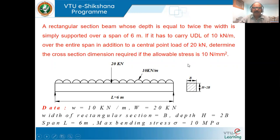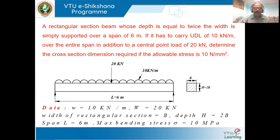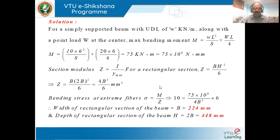For any problem on bending stress, we use M/I = σ/y. For the given loading we get bending moment M, and for a rectangular symmetrical section y = H/2. The moment of inertia for a rectangular section is I = bH³/12. Since H = 2B, everything will be in terms of B. Sigma is given, so the unknown is B, and once we get B we find H = 2B.